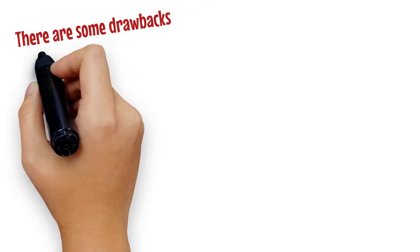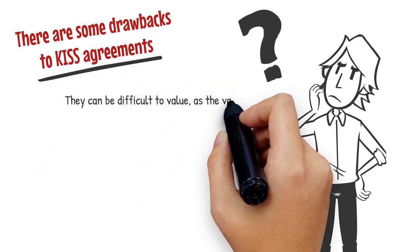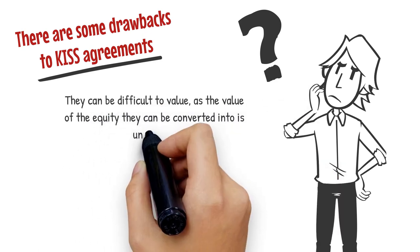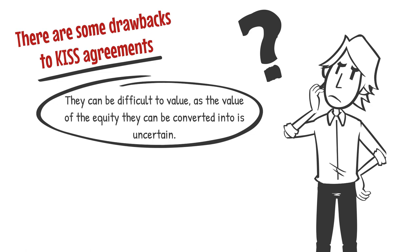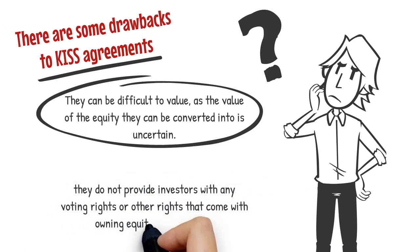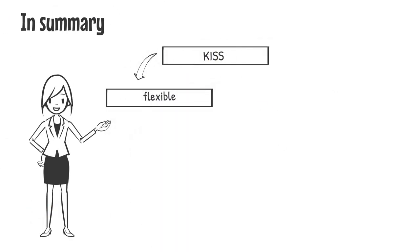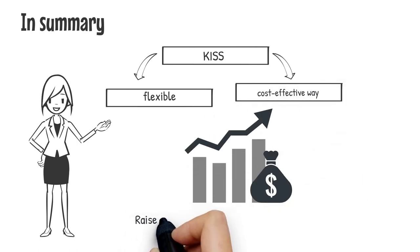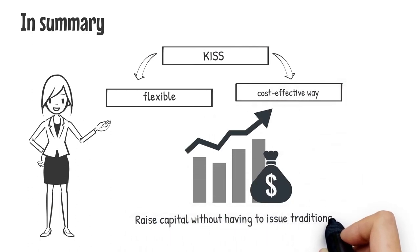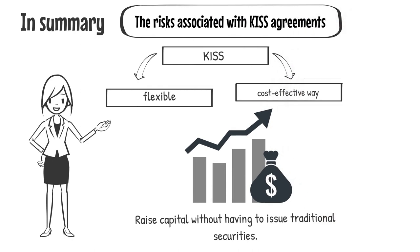However, there are some drawbacks to KISS agreements. They can be difficult to value, as the value of the equity they can be converted into is uncertain. Additionally, they do not provide investors with any voting rights or other rights that come with owning equity in a company. In summary, KISS is a flexible and cost-effective way for startups to raise capital, but it is important to understand the risks, as the value of the equity they can be converted into is uncertain.